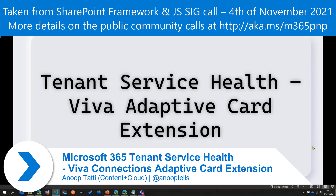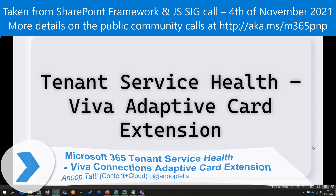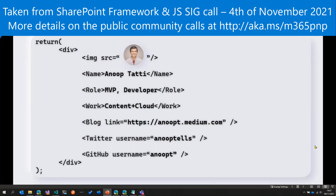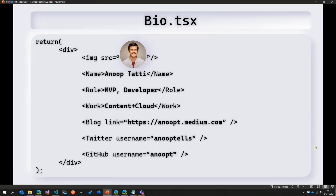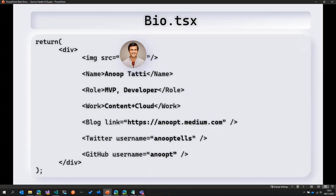Today's demo is on an adaptive card extension called the Tenant Service Health. Quick introduction about myself: my name is Anuq Tati. I became an MVP just recently, and I'm a developer in content and cloud here in the UK. I write blogs on Medium under the account Anuq Tati, my Twitter username is Anuq Tati, and my GitHub username is Anuq Tati — you can follow me on those platforms.